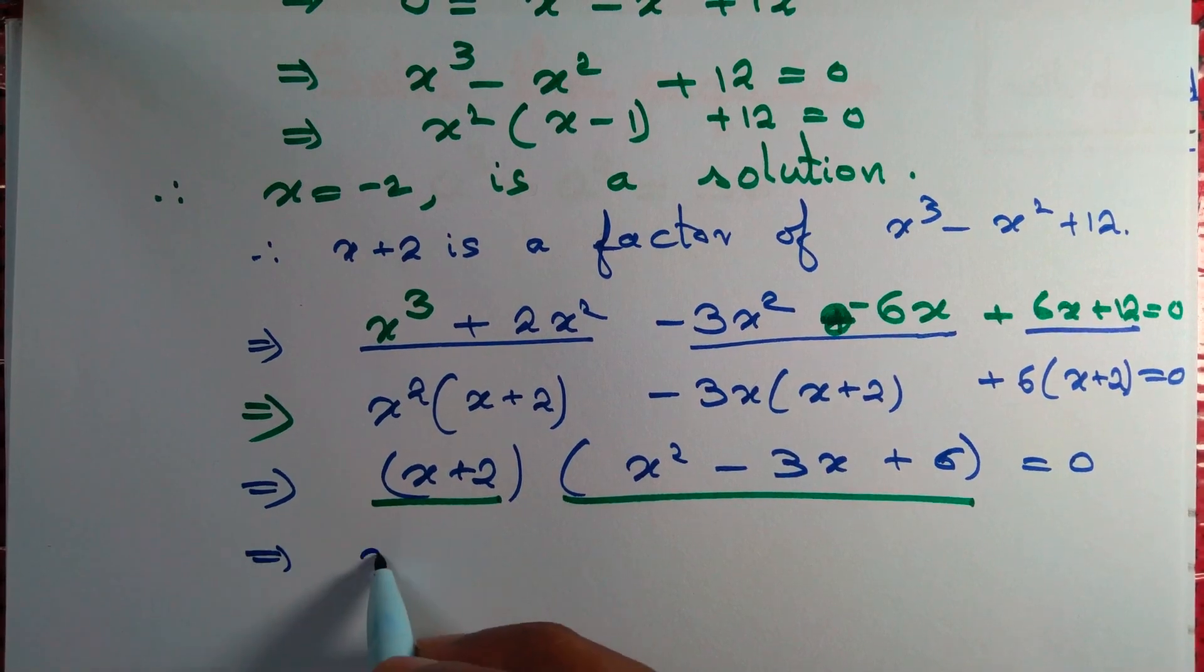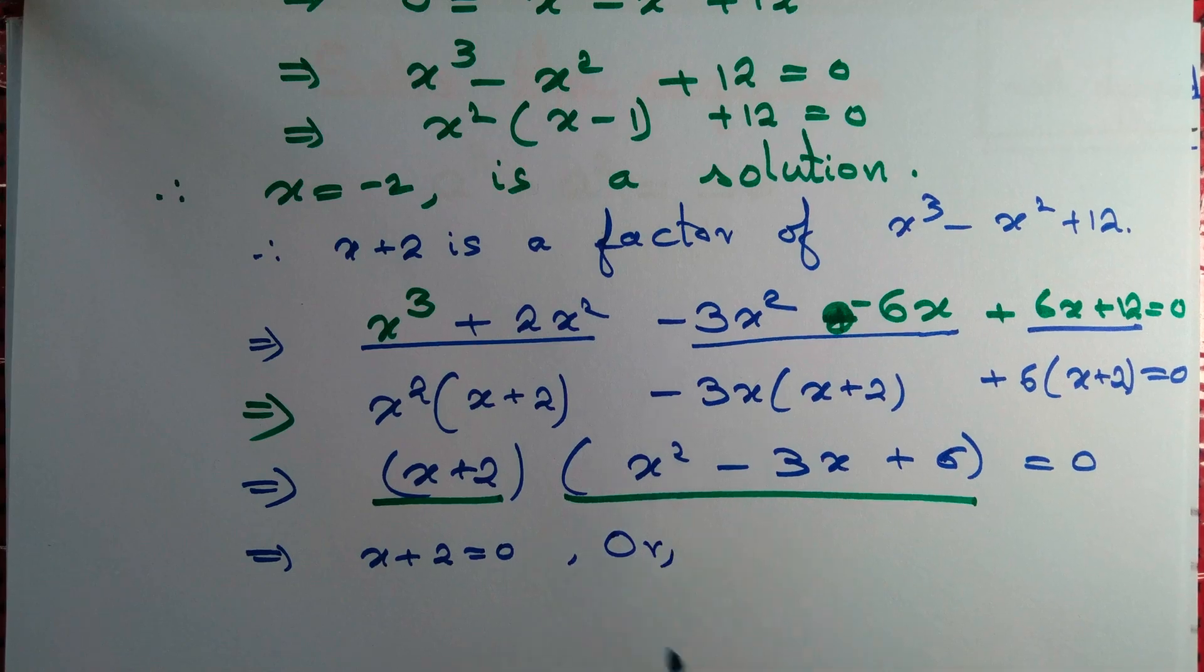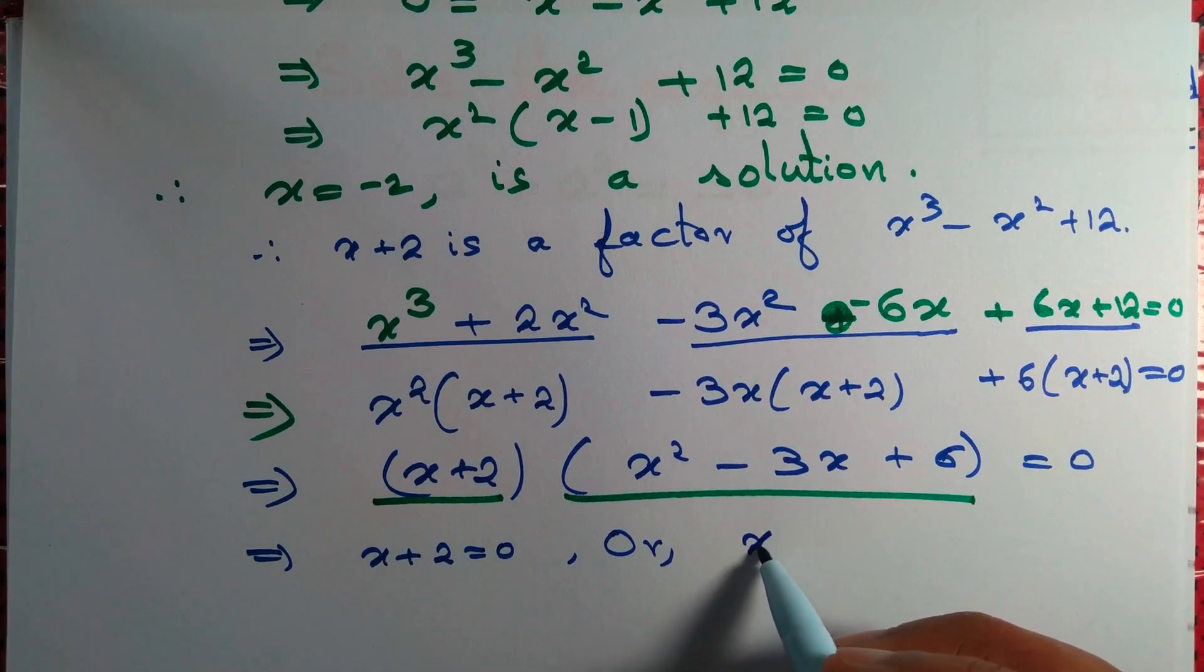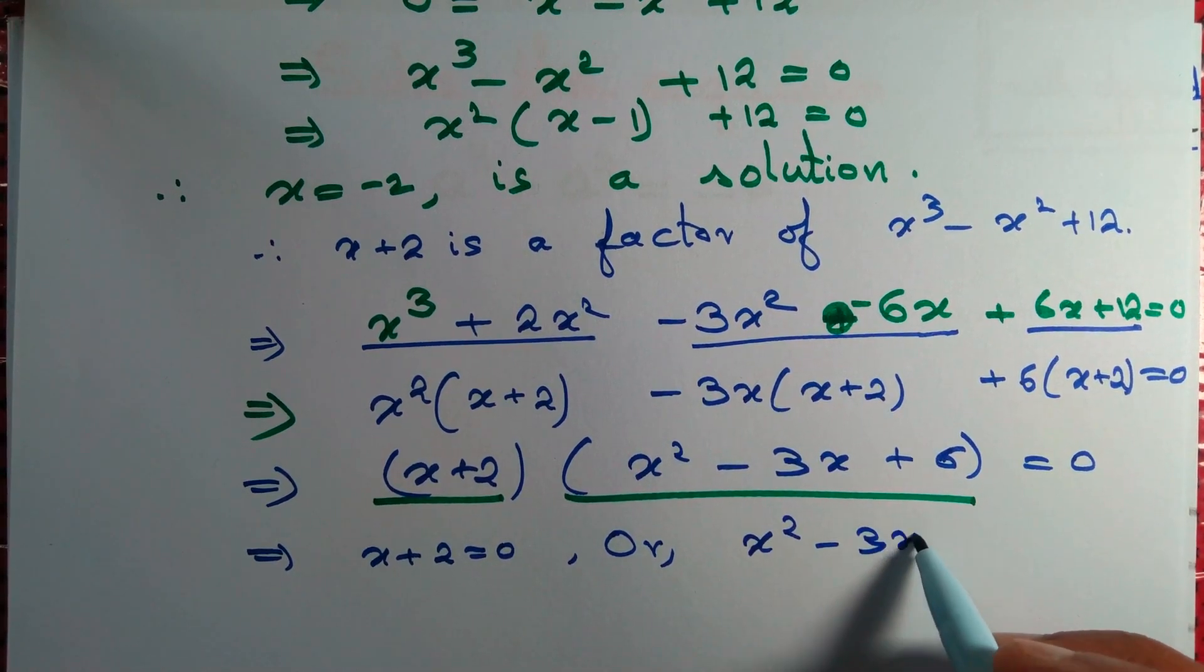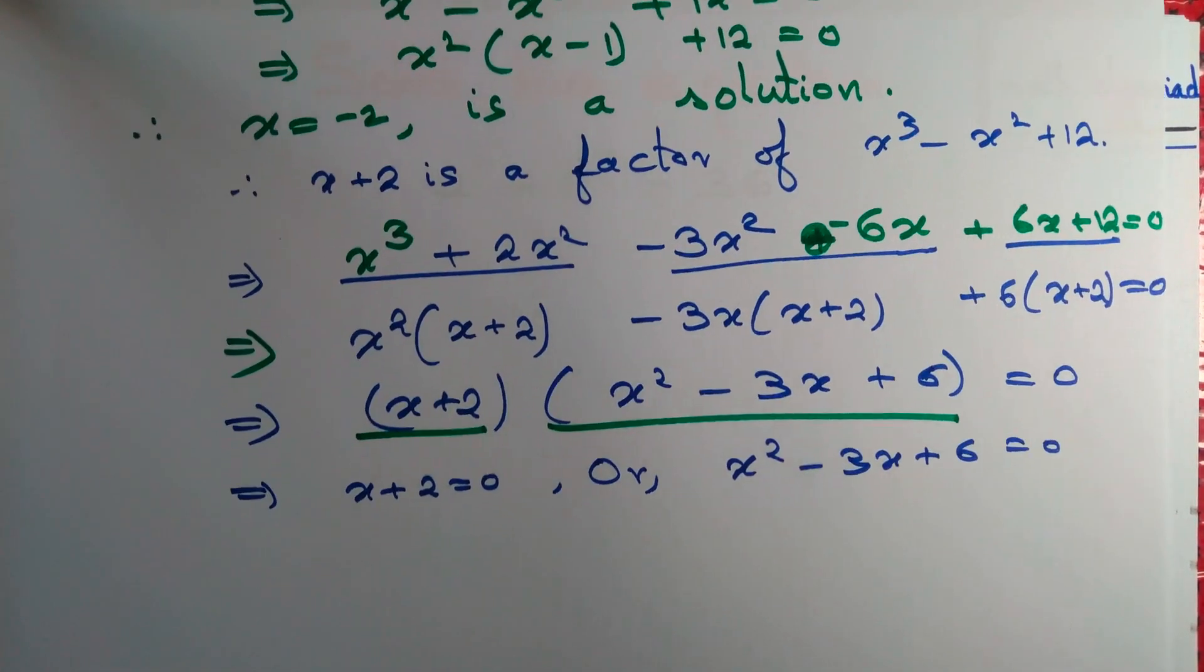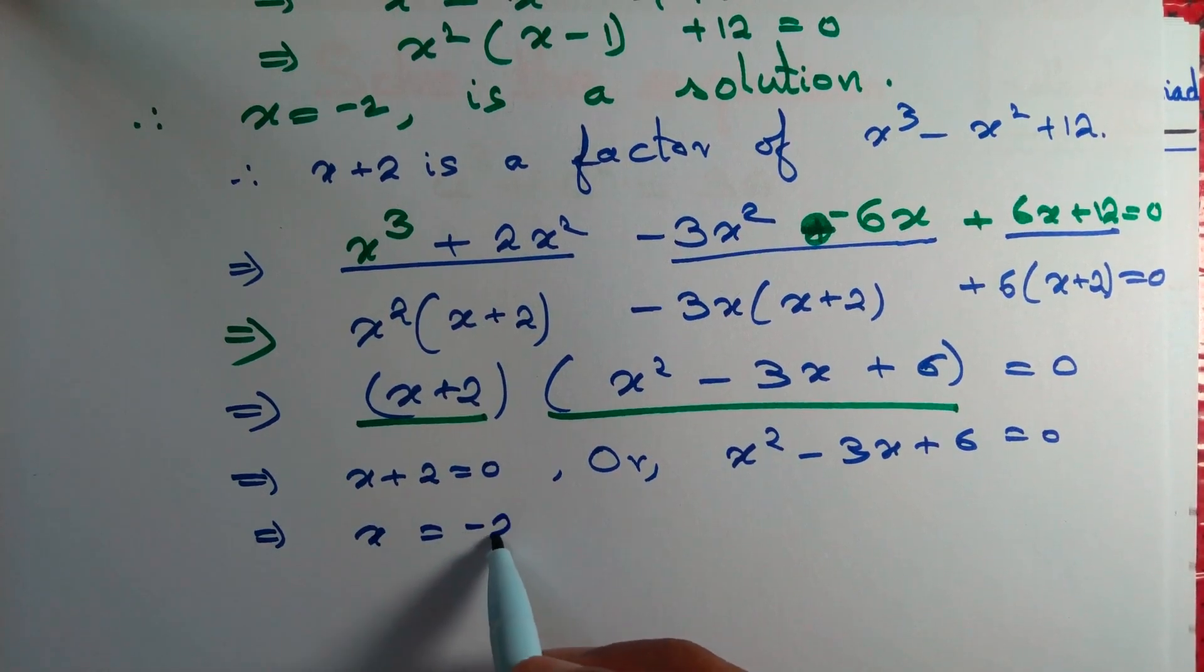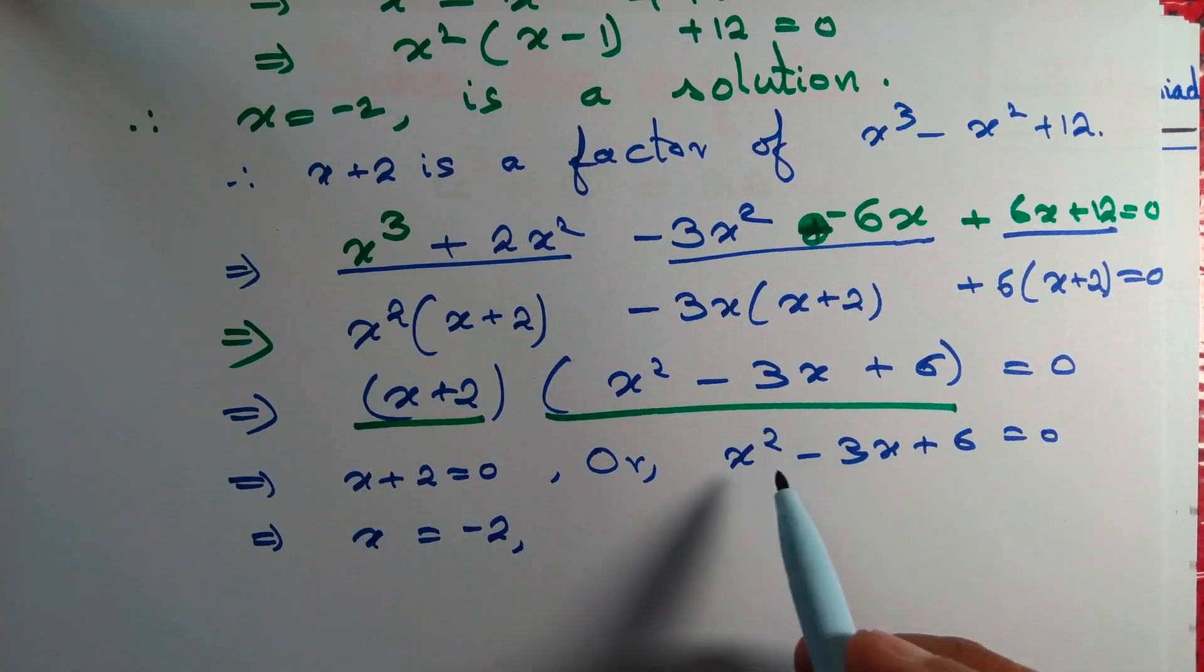So we obtain x plus 2 equals 0, or maybe both of them are 0, x square minus 3x plus 6 equals 0. Whenever x plus 2 equals 0, then we have x equals minus 2. What about this equation?